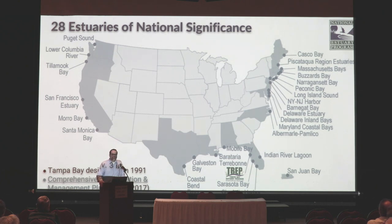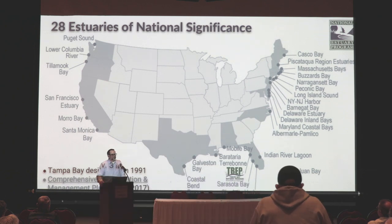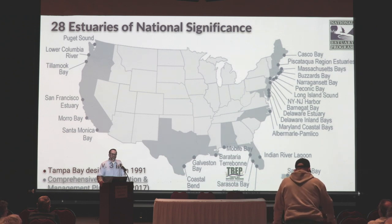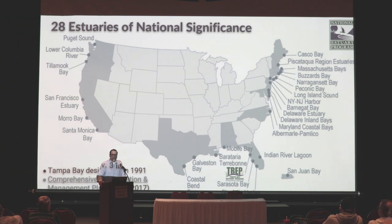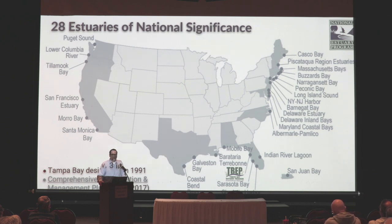My program is considered a national estuary program. Congress, back in the early 1990s, designated the Tampa Bay Estuary as an estuary of national significance, which directs federal dollars to our place-based program. Since about 1996, we matched those federal funds with local dollars to develop an interlocal agreement between the federal government and the county and city governments surrounding Tampa Bay. We are one of 28 national estuary programs scattered throughout the country, and there are three in the state of Florida: Sarasota Bay, Charlotte Harbor region, and the Indian River Lagoon on the east coast.